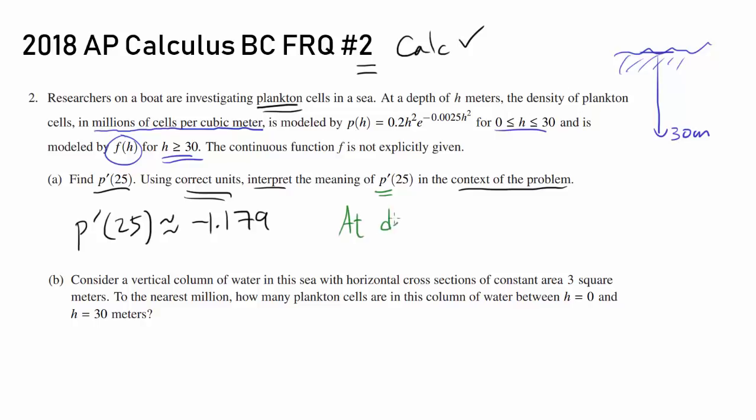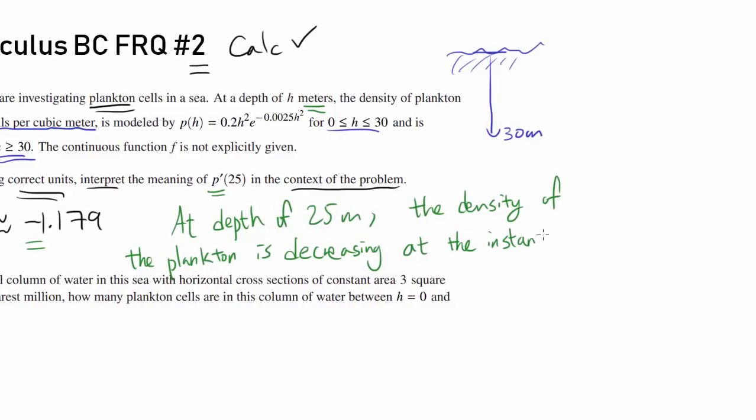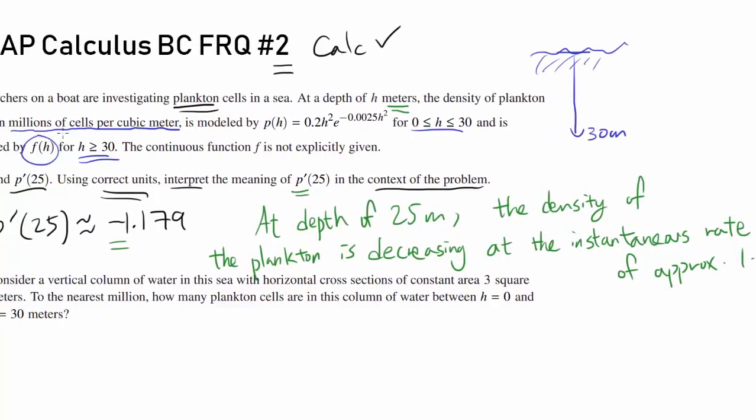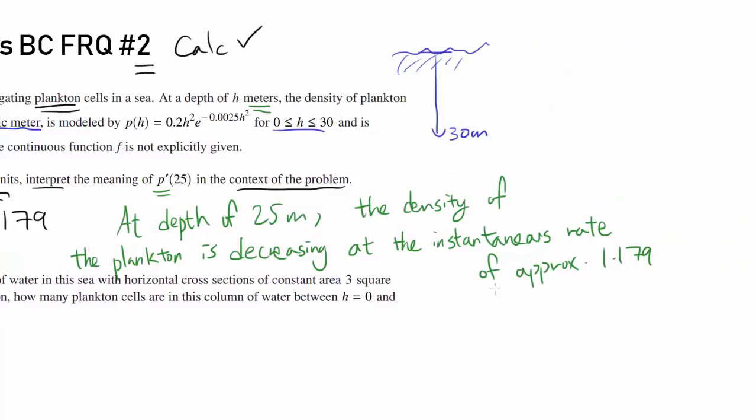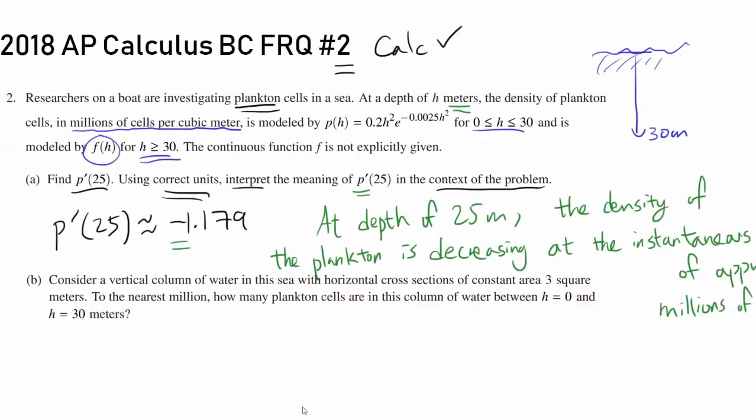At depth of 25 meters, the density of the plankton is decreasing because you have a negative sign. It's decreasing at the instantaneous rate of approximately 1.179, and what's the unit? Millions of cells per cubic meter. So that's the answer to part A.